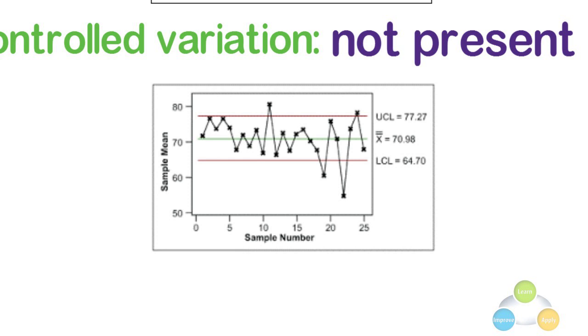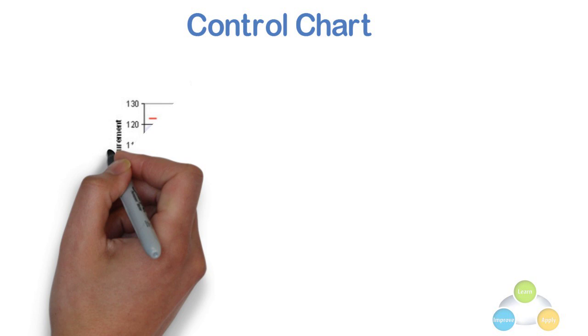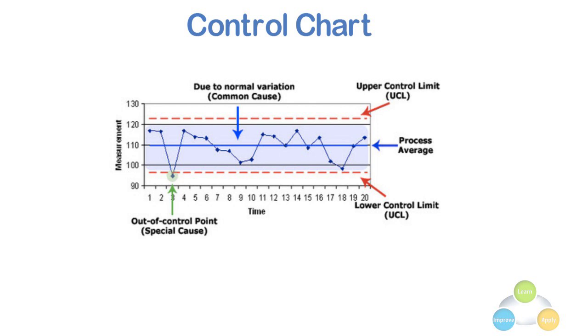Control Chart. The control chart is a graph used to study how a process changes over the period of time. Data are plotted in time order. A control chart always has a center line for the average, an upper line for the upper control limit and a lower line for the lower control limit. These lines are determined from the historical data.